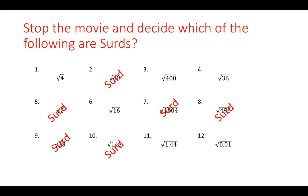Similarly with question 12, if you work out the square root of 0.01, the answer comes out exactly as 0.1. It doesn't give you a long decimal, it just gives you a nice neat decimal, and therefore that can be considered as not being a surd either.